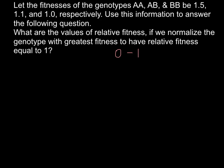The genotype with the greatest fitness is AA with a value of 1.5. We use W for relative fitness. For genotype AA, we divide 1.5 by 1.5, and the answer is 1. So W_AA = 1.